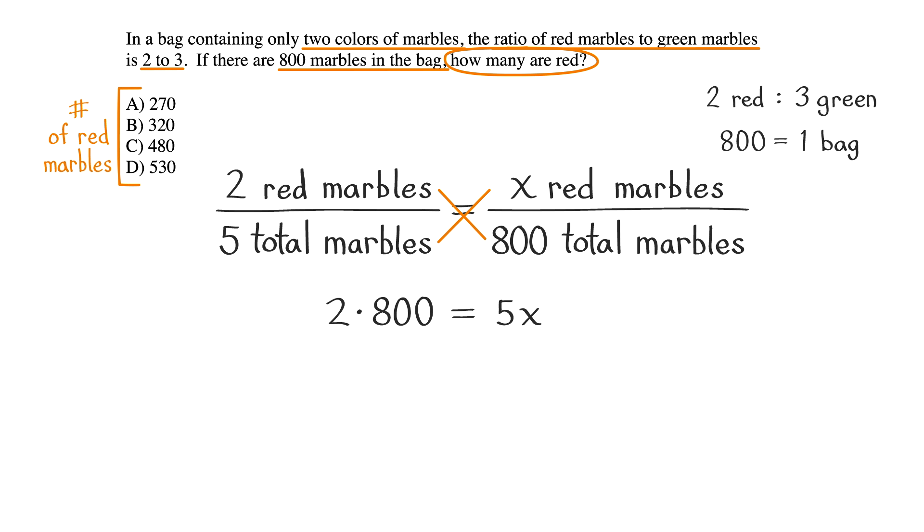2 times 800 equals 5x. 800 times 2 gives us 1600, so we have 1600 equals 5x. We need to isolate the variable x by dividing both sides of the equation by 5.